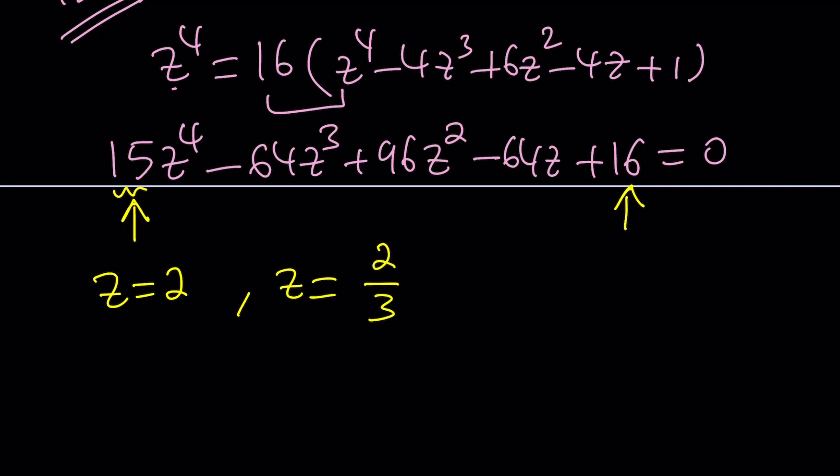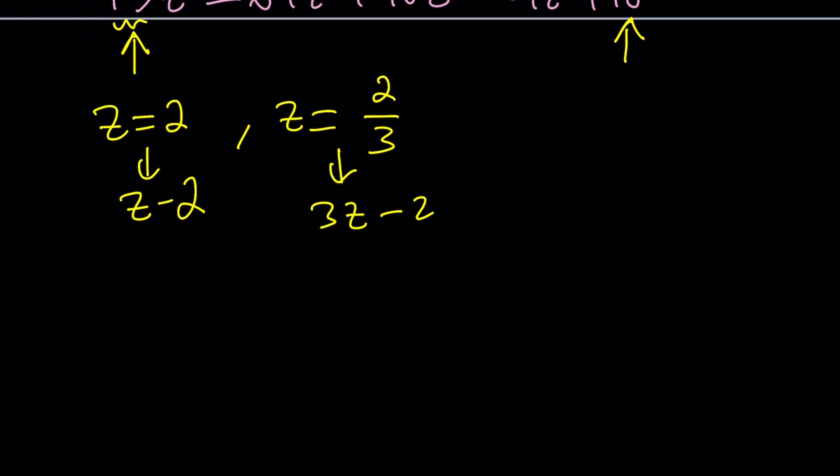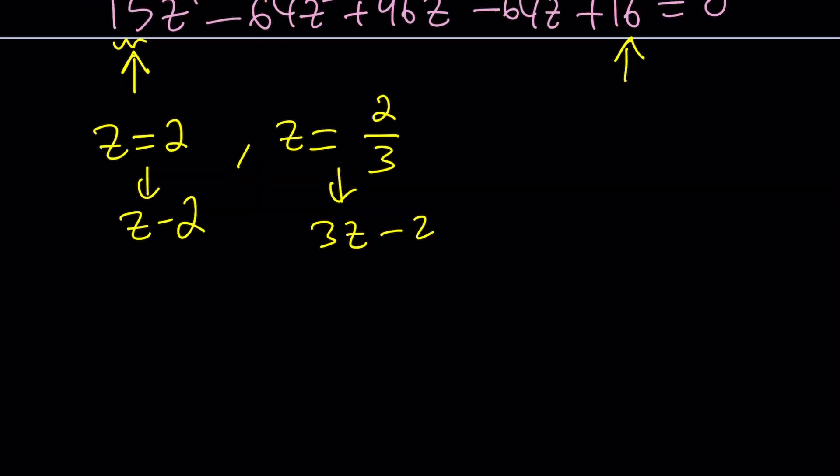And when you factor this using the fact that Z minus 2 must be a factor, and of course 3Z minus 2 is going to be another factor, our quartic is going to look like this. Z minus 2 multiply by 3Z minus 2 times 5Z squared minus 8Z plus 4 equals 0.